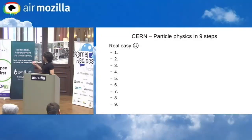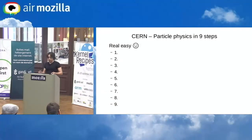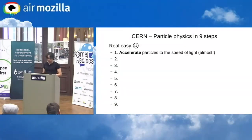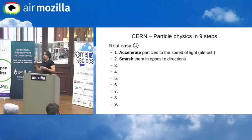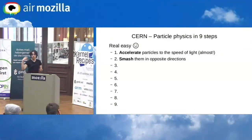Let's get to the fun stuff: particle physics in nine steps. First, you accelerate the particles to almost the speed of light — not quite, but almost. Then you put them in a circle and spin them around.